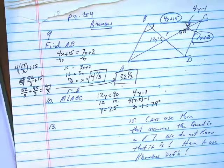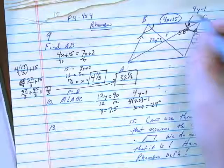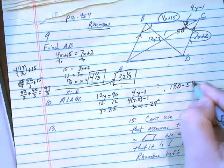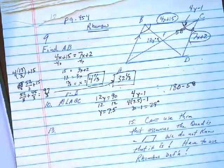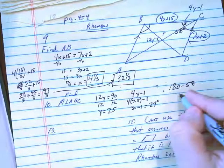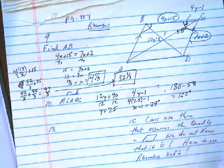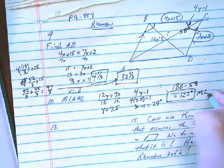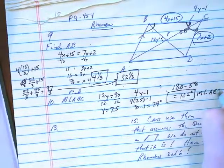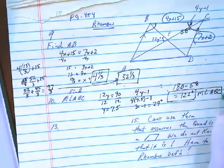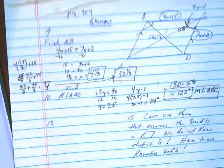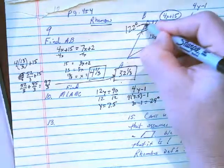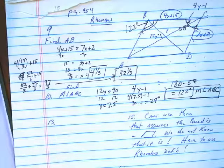And since these are parallel, these would be supplementary. 180 minus 58. What is that? 122. That's equal to the measure of angle ABC. So this entire angle right here is 122 degrees.